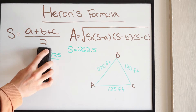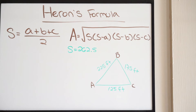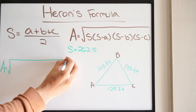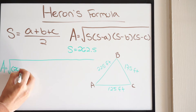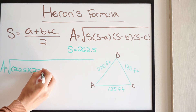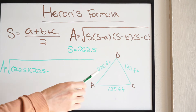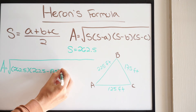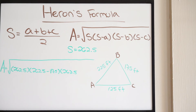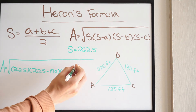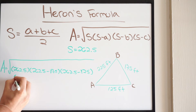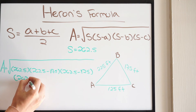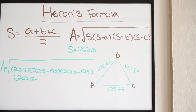We're going to use the area formula and plug in our values. Area equals the square root of s times (s minus a) times (s minus b) times (s minus c). So that's the square root of 262.5 times (262.5 minus 175) times (262.5 minus 125) times (262.5 minus 225).